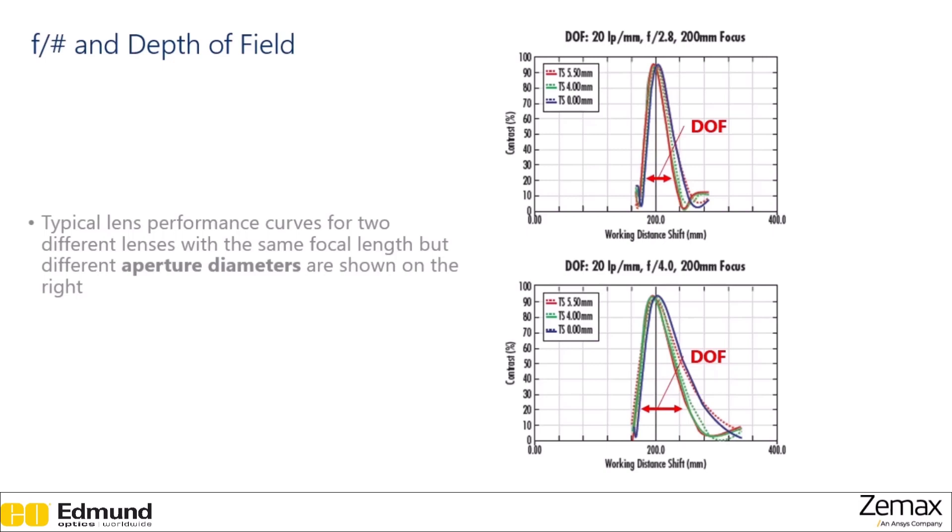And what we can see is that the contrast, to get a 20% contrast, there is a smaller range of working distances for the smaller F number or larger aperture. And for the larger F number or smaller aperture, the depth of field is larger.